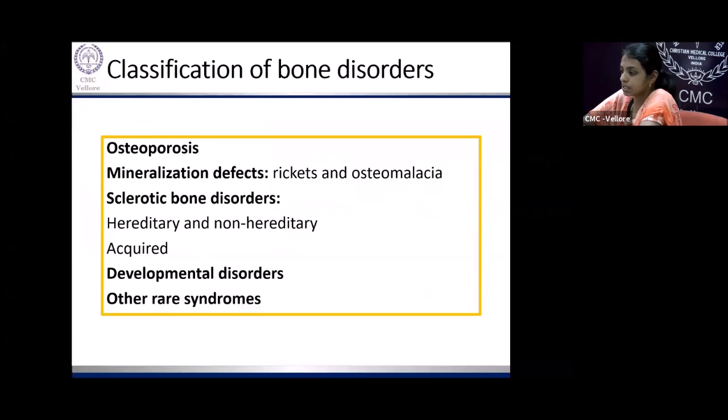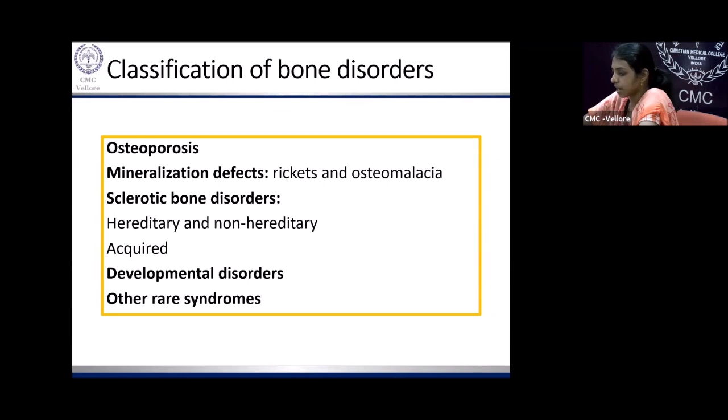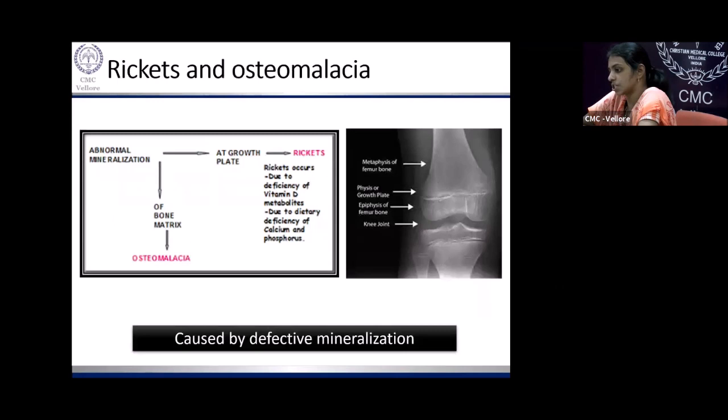Classification of metabolic bone disease — this is not an exhaustive list. Besides osteoporosis, we have mineralization defects that lead to rickets and osteomalacia. We have a whole lot of sclerotic bone disorders, which may be hereditary, genetic, and acquired. We also have developmental disorders and other rare syndromes.